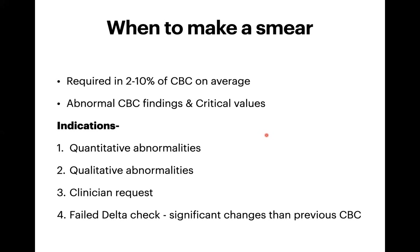There are several indications, broadly classified into four categories: quantitative abnormalities in the CBC, qualitative abnormalities, clinician request for PBF, and failed delta check. Delta check means looking at consecutive CBCs for a patient — if there is a significant change, that need not fall in the abnormal CBC values. For example, a hemoglobin of 11 g/dL may not trigger a slide review, but if this patient had been showing 14 g/dL previously, that 3-gram fall is significant and requires a slide examination.